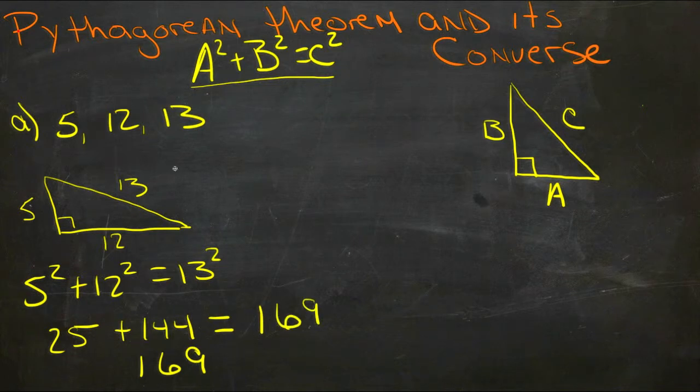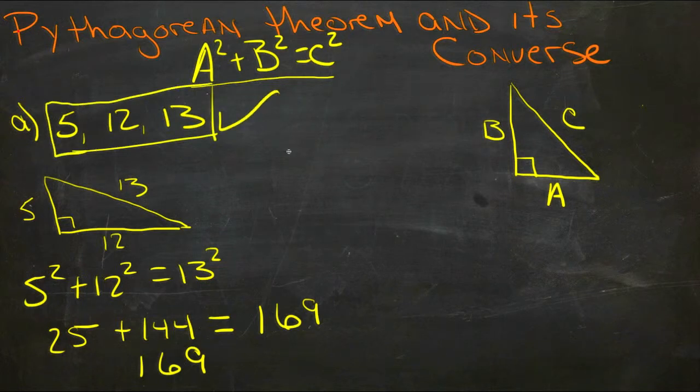So yes, this does work, and 5, 12, and 13 are the sides of a right angle triangle.